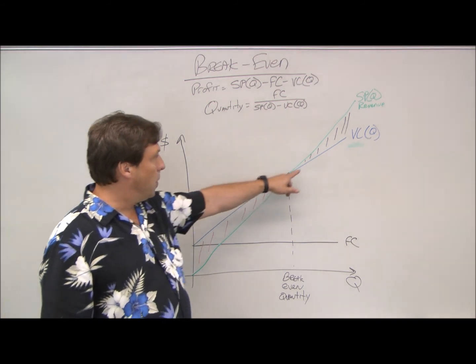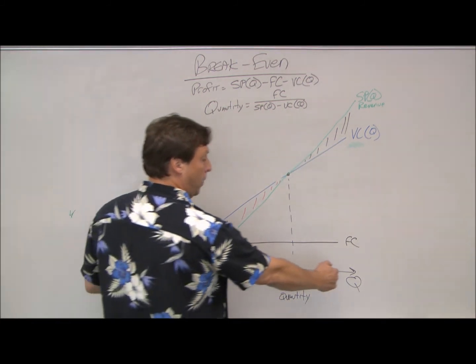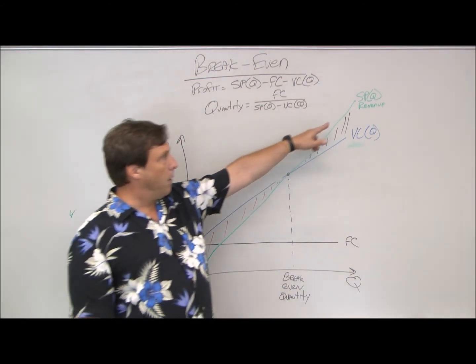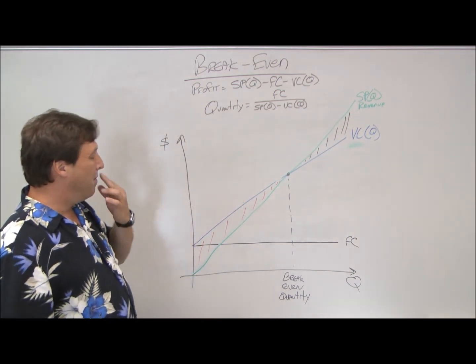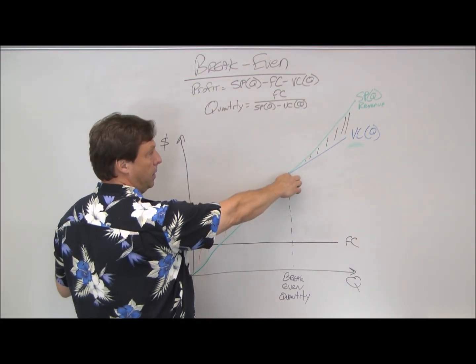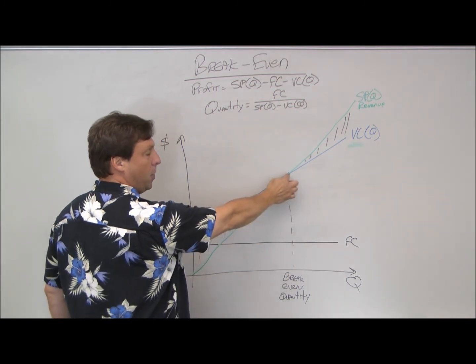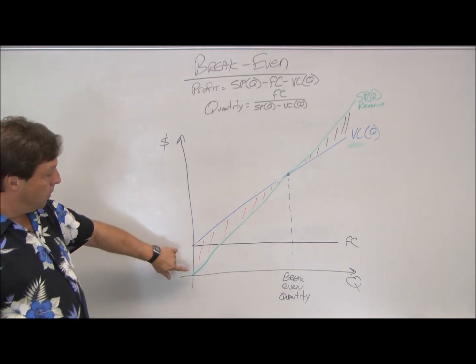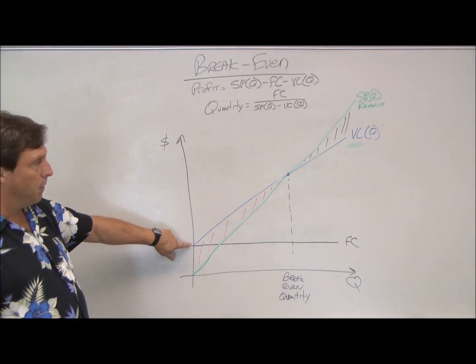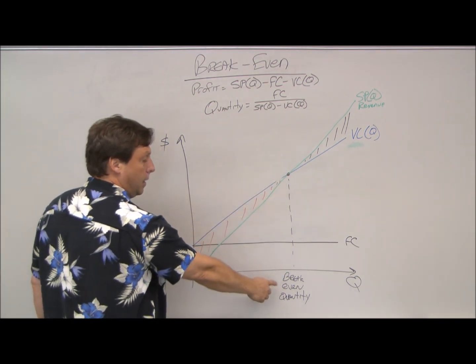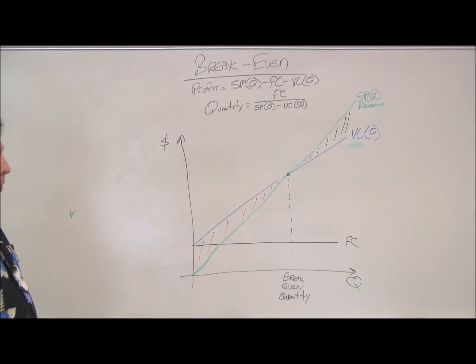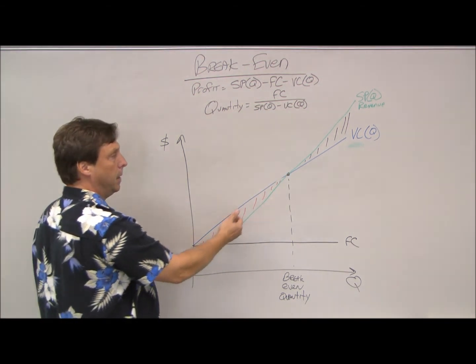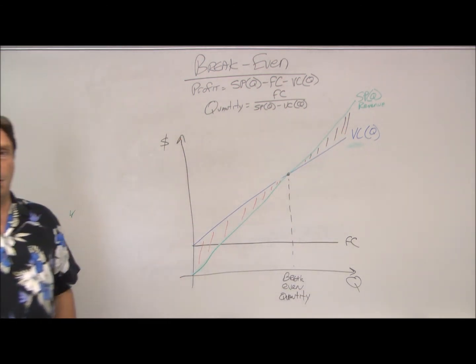We have our variable costs, which vary as the quantity goes up. The more we produce, the more our variable costs go up. And we have our revenue. The point where revenue and the combination of fixed and variable costs intersect is our break-even point. You notice I've stacked the variable costs on top of the fixed cost here. If we sell, and the break-even is a quantity, it's a number, a number of units produced. So if we don't produce that many, we know we're going to be in the red and lose money. If we produce more, we'll be in the black and we will make money.